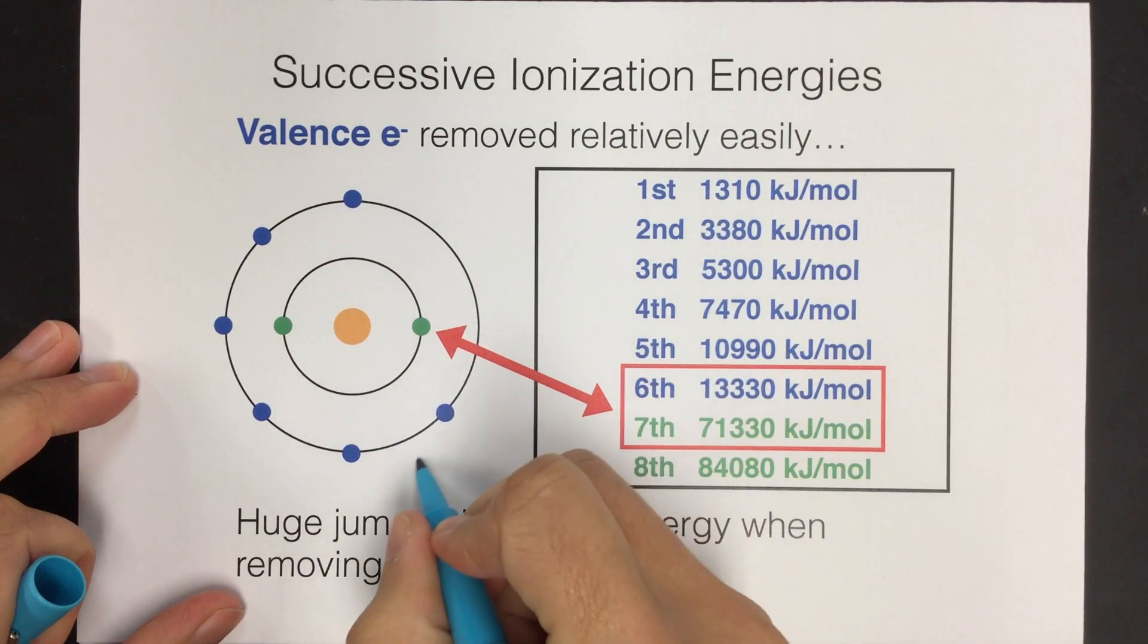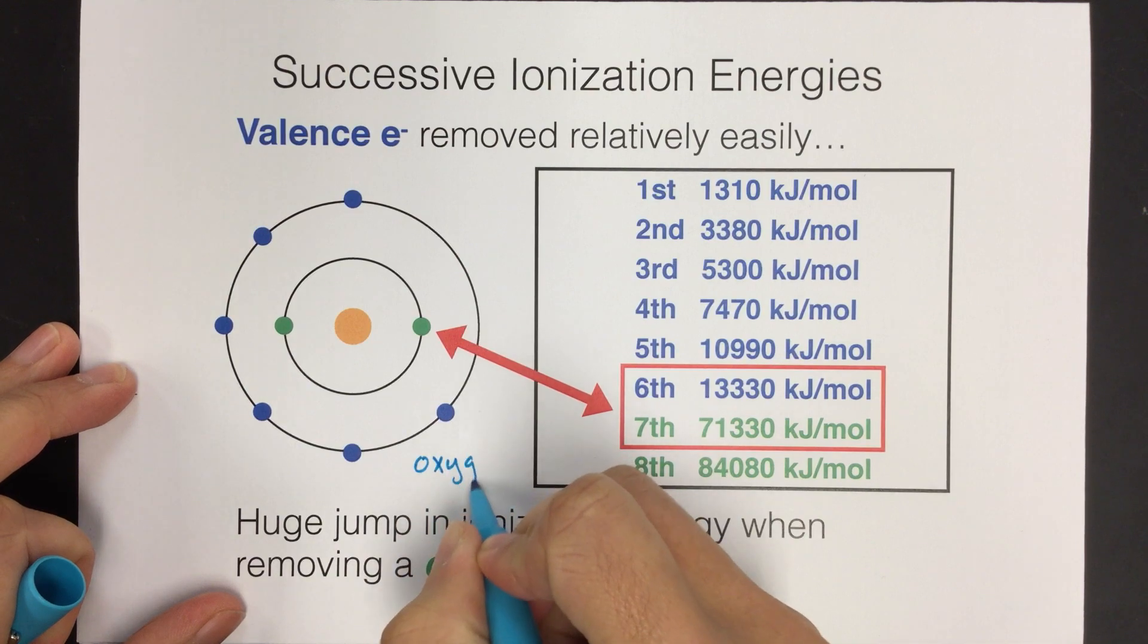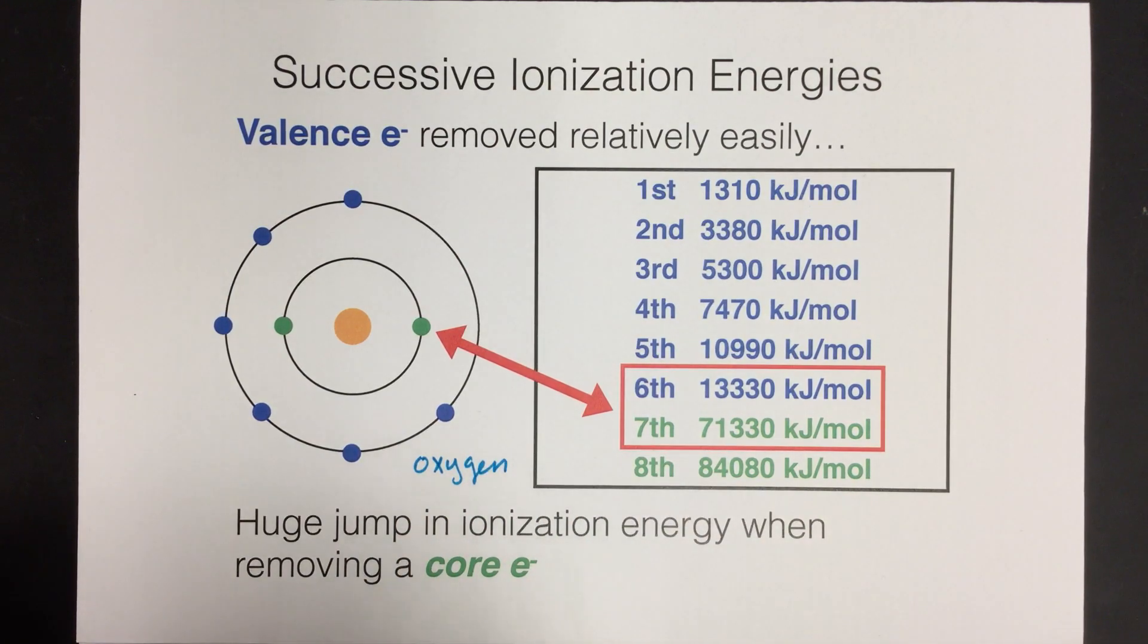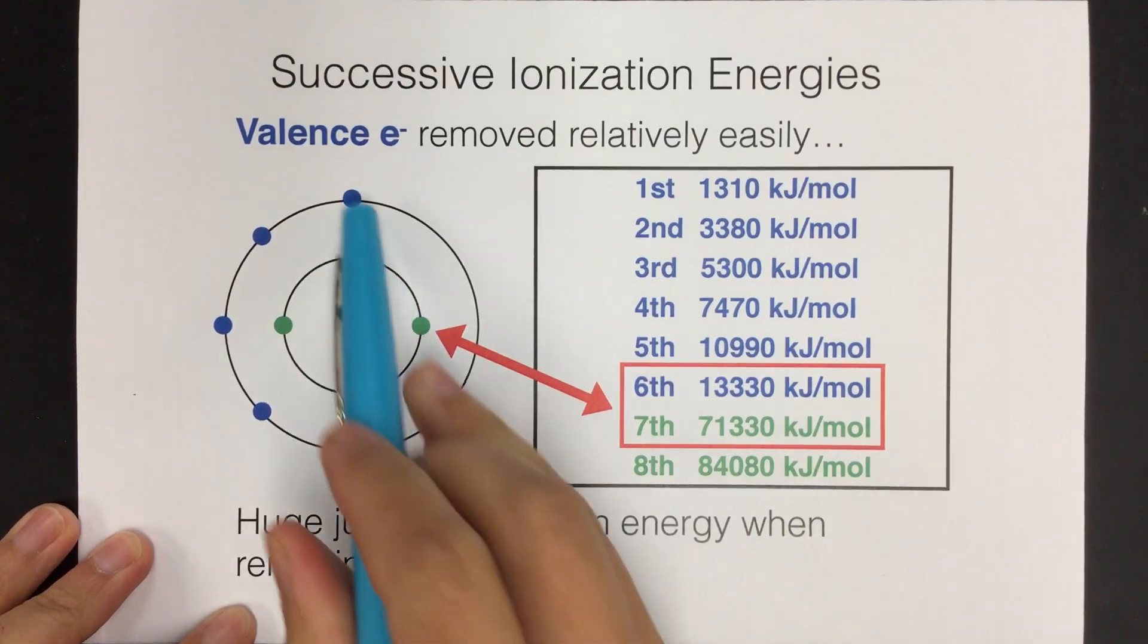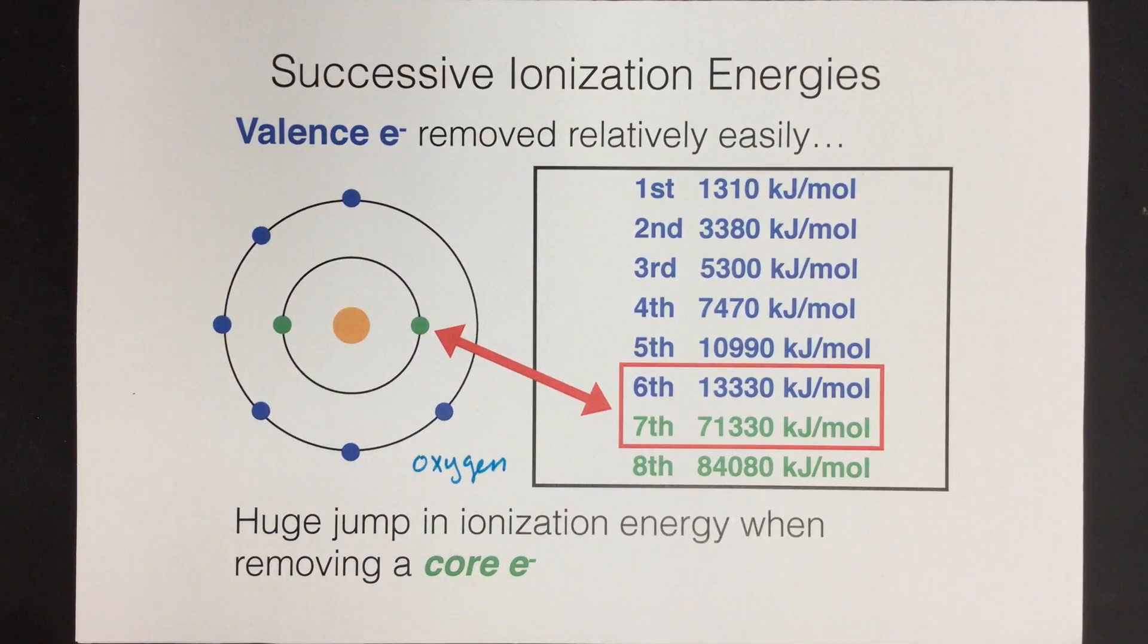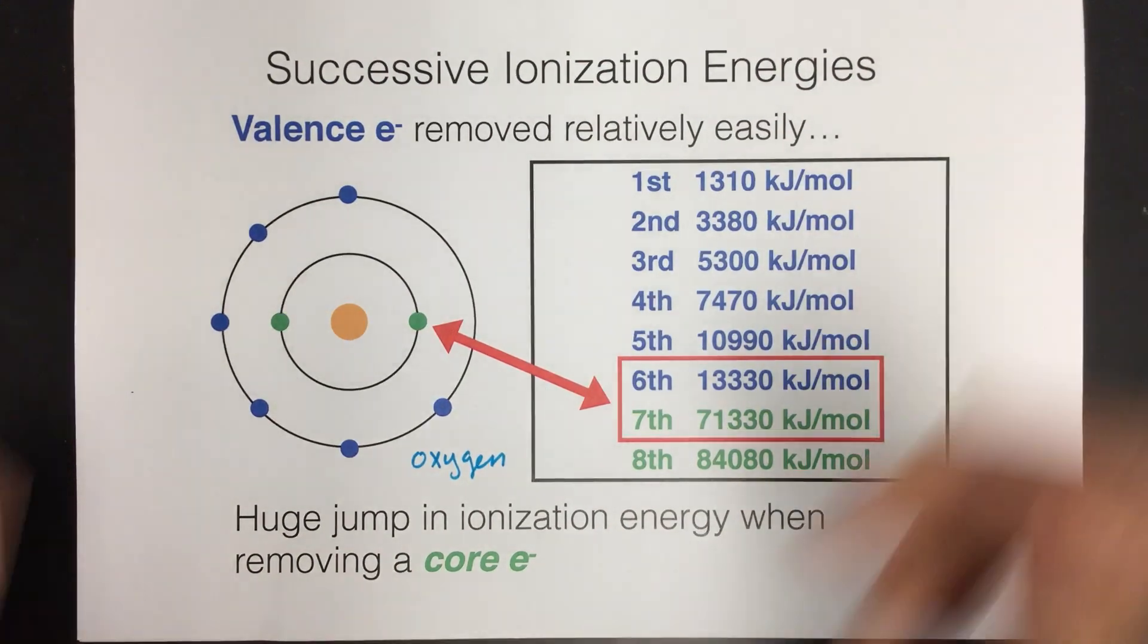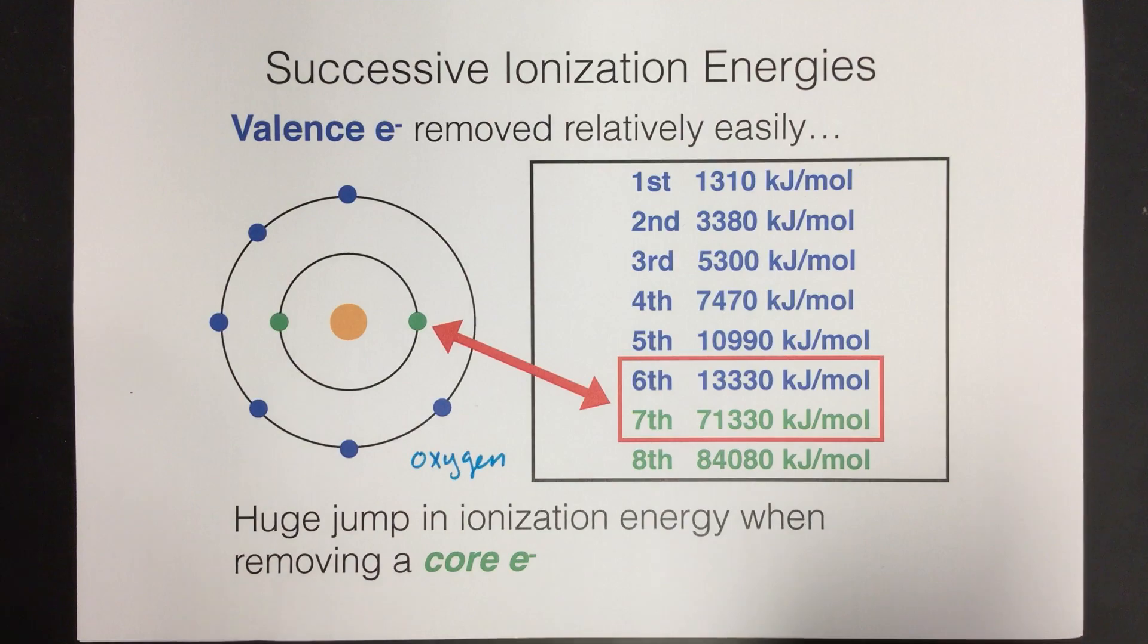So here I have, this is actually oxygen, a little diagram of oxygen. So it has two electrons in the first energy level, and then it has six in the second energy level. And this diagram just shows us the electrons along with the energy required to remove them.